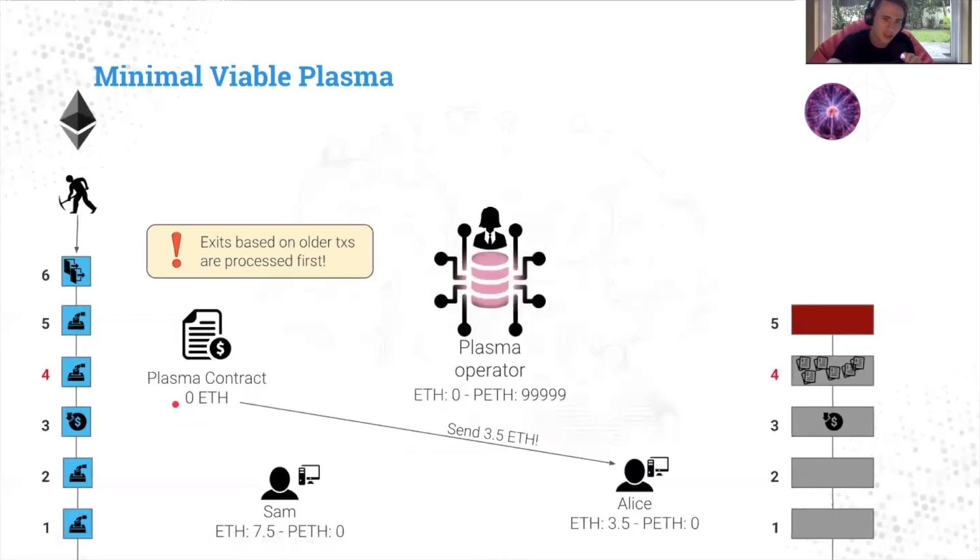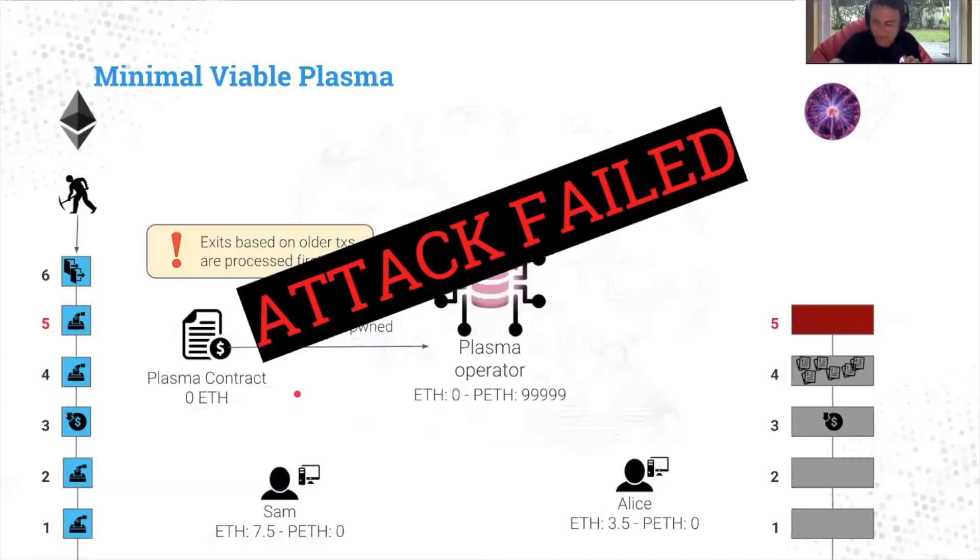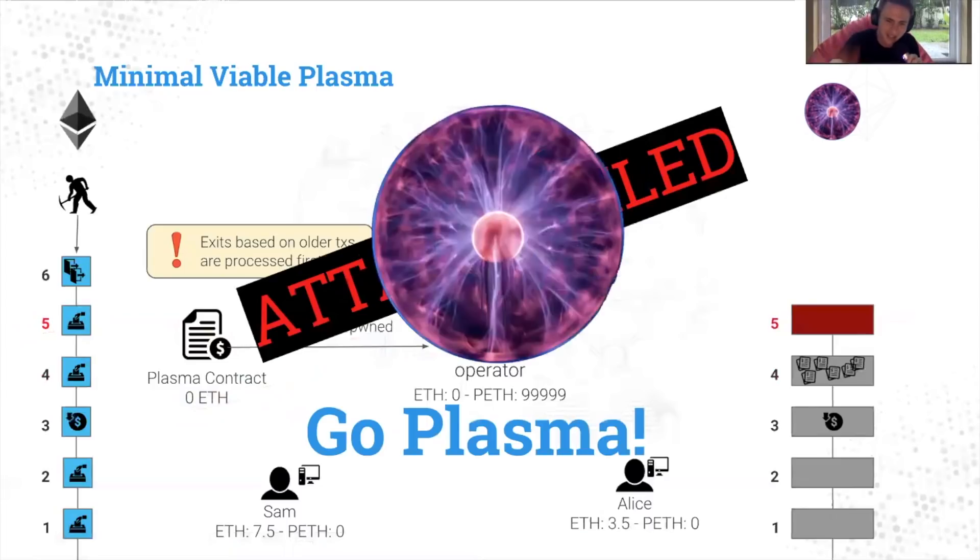So by the time the plasma operator's block is processed, lol, plasma operator is pwned. There is no ETH to send. Hallelujah. Attack failed. Go plasma.